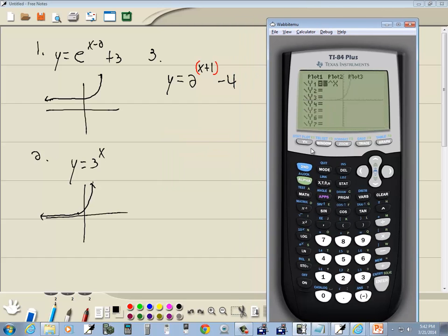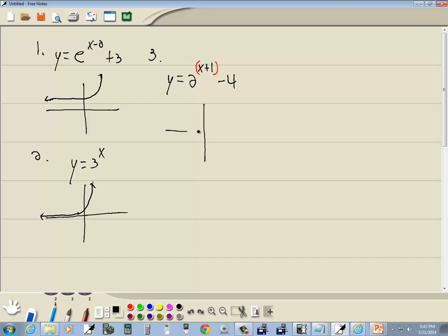So press my y equals, press my clear. I'll do 2, and then caret for the exponent. Beginning parentheses for the exponent, x plus 1. And then we'll put a closing parentheses on the exponent, and then minus 4. And then graph. And something like that right there.